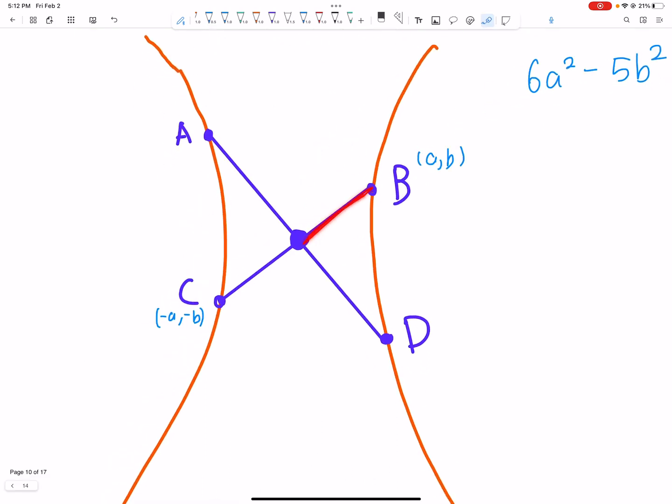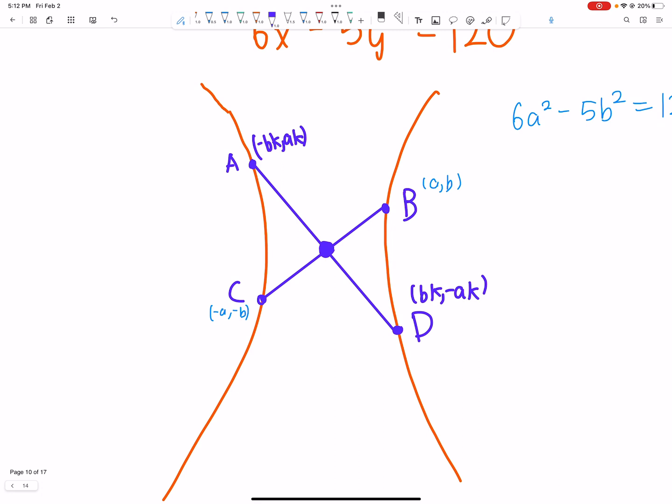The key thing is the slope from B is b/a. So the perpendicular slope is -a/b. Therefore, the other vertices will be of the form (bk, -ak) and (-bk, ak) for some constant k. They have to be symmetric because the rhombus passes through the origin.